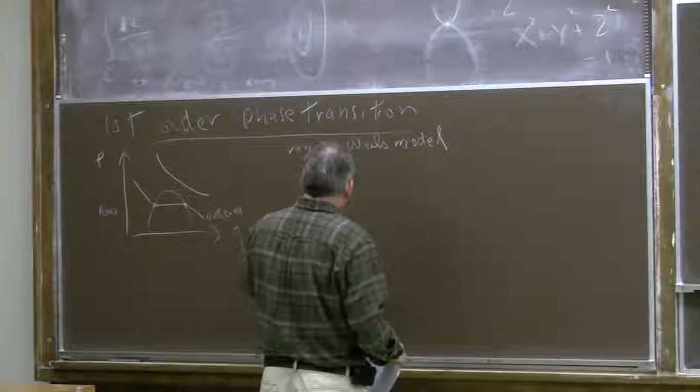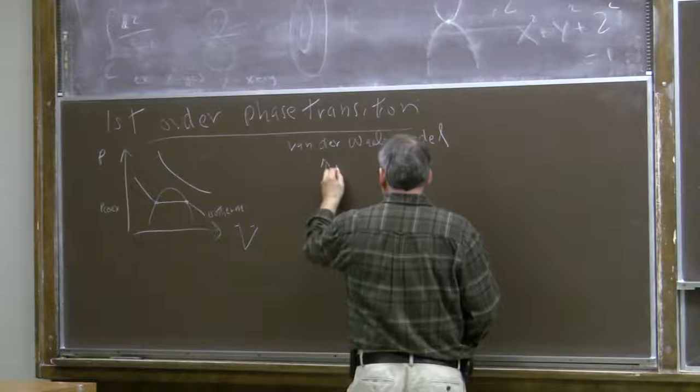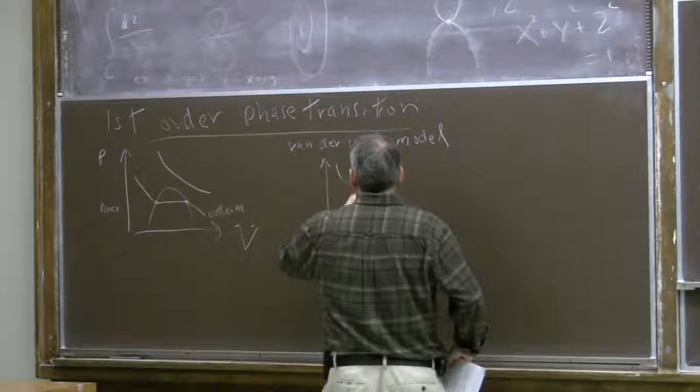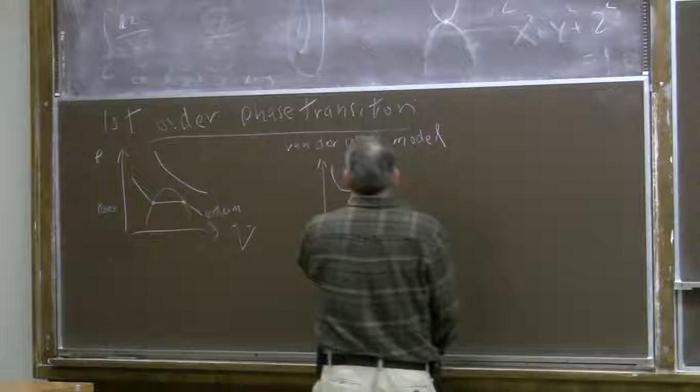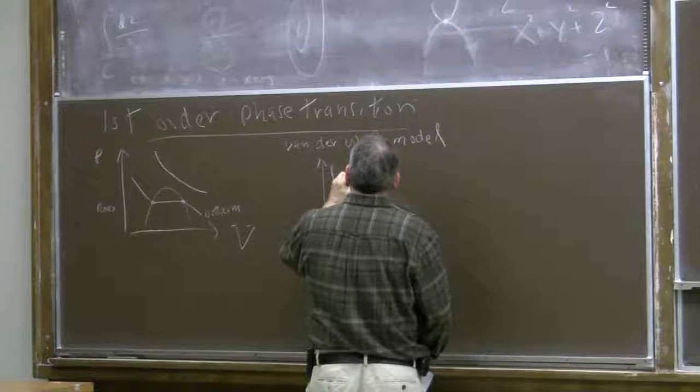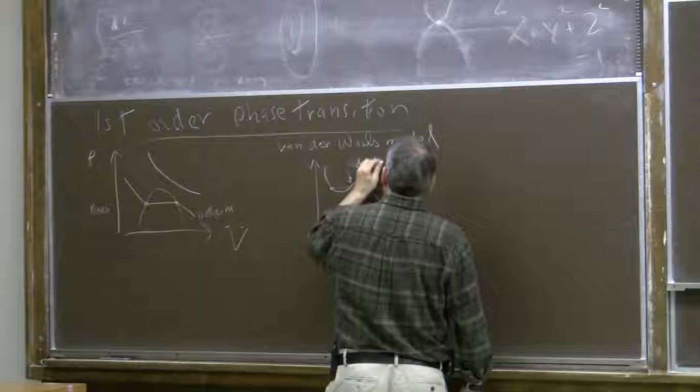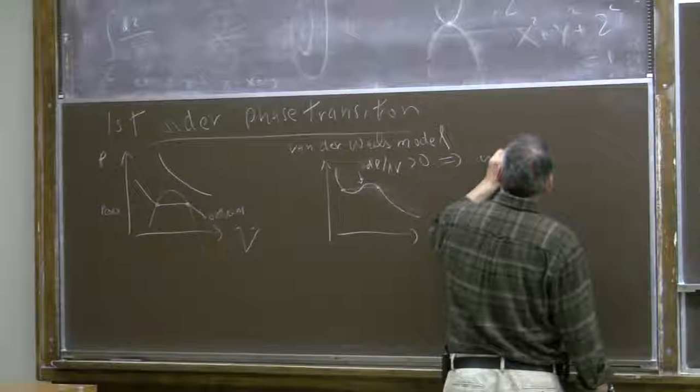What we actually see in the Van der Waals equation for isotherms with temperature below the critical temperature is that the pressure as a function of the volume is not monotonic. The right way to interpret that is that this region where dp/dv is positive, where the compressibility is negative, indicates an instability.